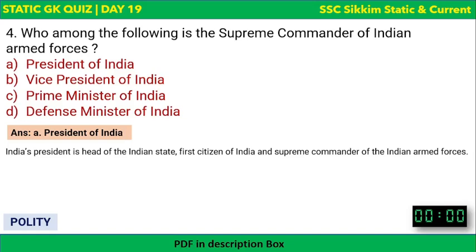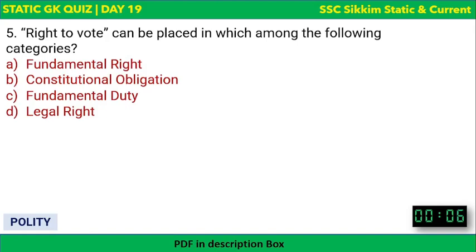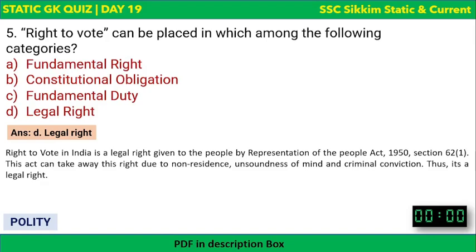Next: Right to vote can be placed in which category — Fundamental Right, Constitutional Obligation, Fundamental Duty, or Legal Right? The correct answer is Legal Right. It is not a fundamental right; it is given by the Representation of the People Act 1950 under Section 62(1). It can be taken away due to non-residence, unsoundness of mind, or criminal conviction, unlike fundamental rights which cannot be taken away.